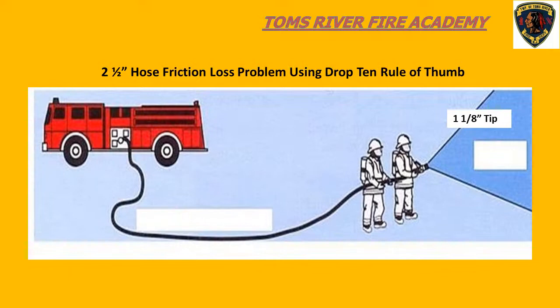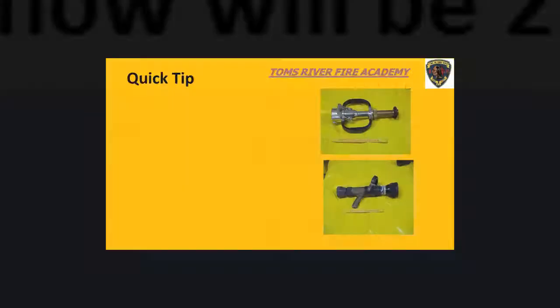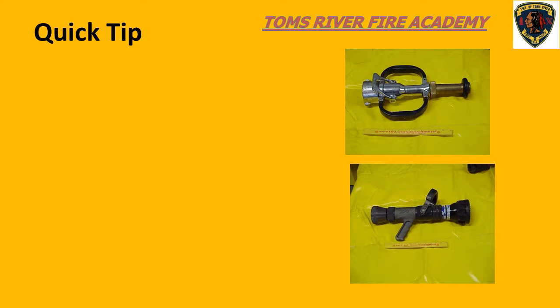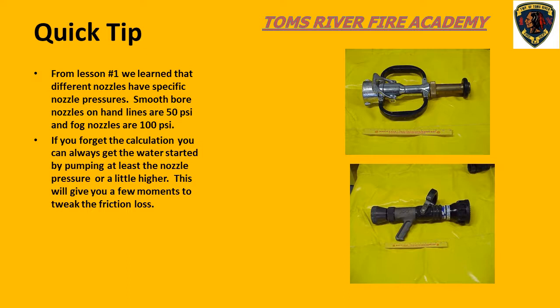Here is an illustration of the problem we just did on the previous slide. Quick tip: if you look at a nozzle, you can quickly determine if the nozzle pressure will be 50 PSI for a smoothbore handline or 100 PSI for a fog nozzle. If you know the nozzle pressure, you can throttle up to at least that pressure — this gets water into the line and gives you a few moments to compose yourself and calculate the friction loss. When working with friction loss numbers, you can round up or down to more quickly multiply numbers together.